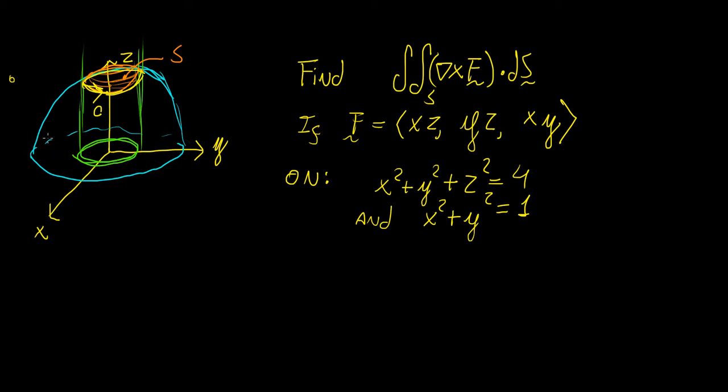Suppose we have an intersection of two surfaces. So we have a cylinder of radius one, so this one is the green cylinder here, and it is intersecting a sphere of radius two, so we have sphere, so sphere of radius two,